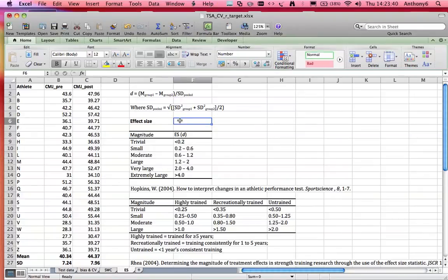So let's compute the effect size for this data set. Firstly, the change in means, and we're just going to use the post-testing data as group 1 purely because it's largest.